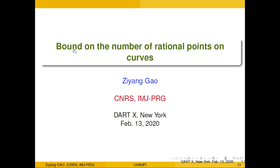Our second talk of the morning is by Ziyang Kao, speaking on bounds on the number of rational points. My talk is more on number theory — it's a result in number theory — but in the proof, minimal geometry plays a very important role. I will explain where it is used.